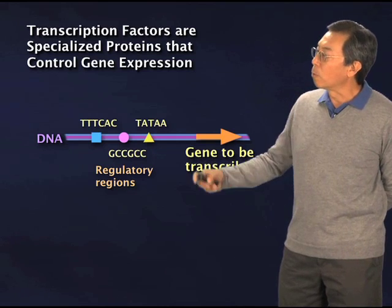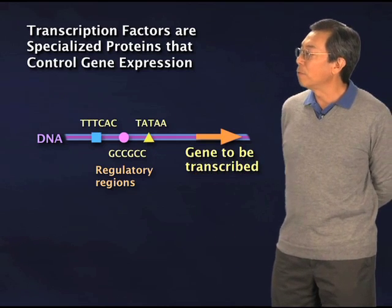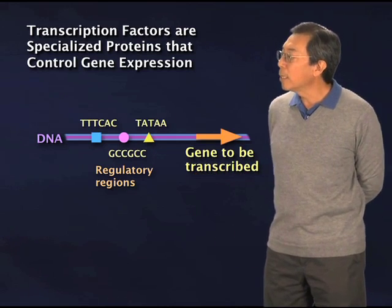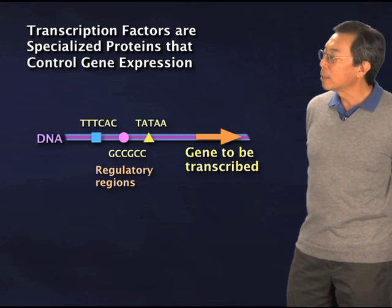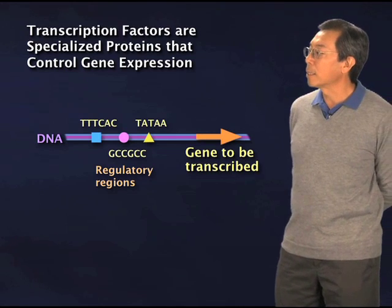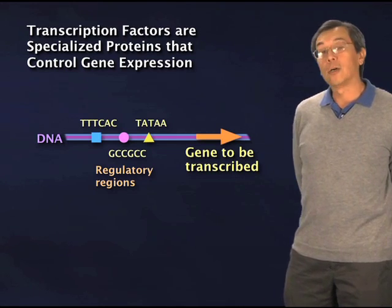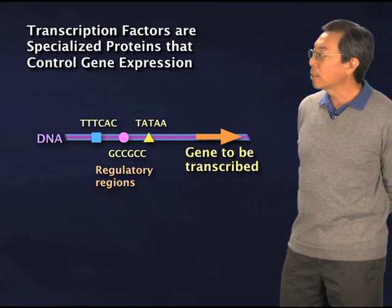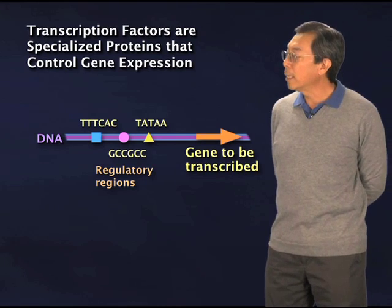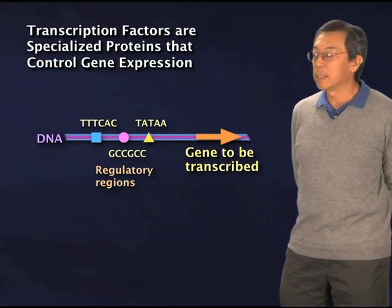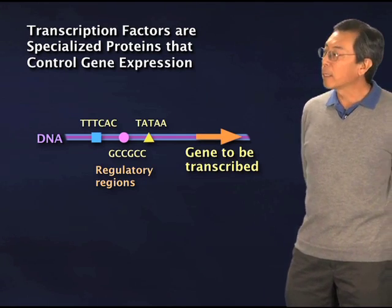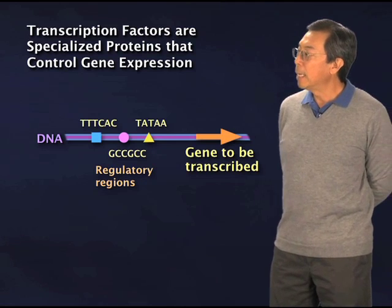The little round one happens to be very GC-rich. The triangle one is a classical element called a TATA box, which I'll tell you about a little bit later. And the blue one is yet another recognition element.